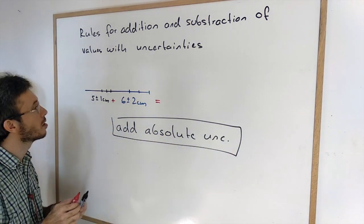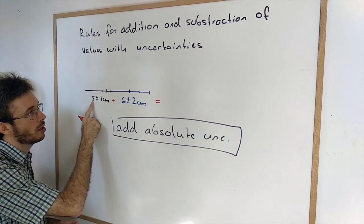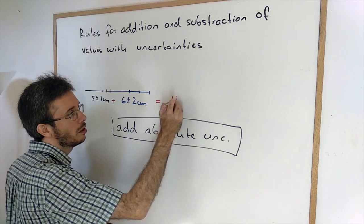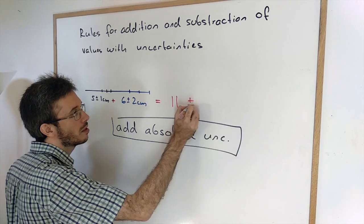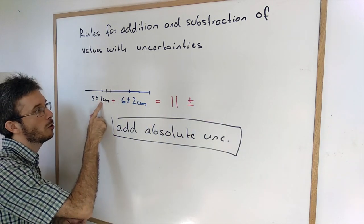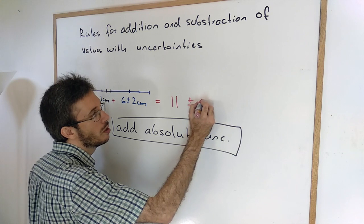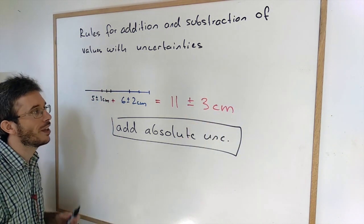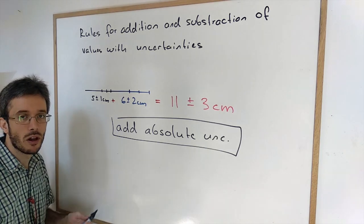So what does this mean in this case? I'm taking my five centimeters, I add the six centimeters, I get 11. So I take the best case scenario and then I take the one centimeter plus the two centimeters gives me three centimeters. And that's it. So simply add the absolute uncertainties.